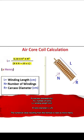R equals carcass diameter (cm), N equals number of turns, 50 equals winding length (cm), wire diameter equals 50. The numerical value resulting from this formula is read as microhenry.